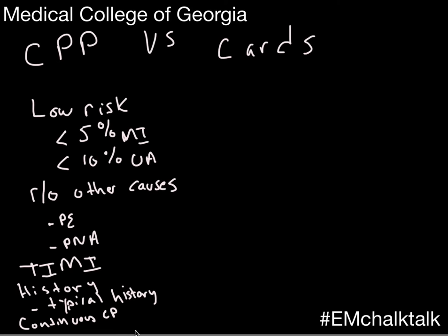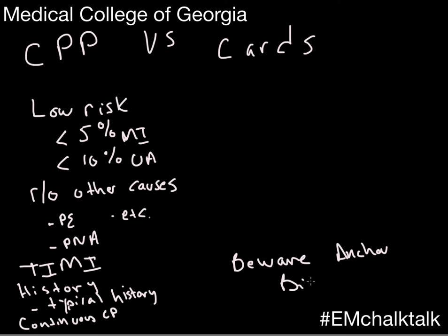A key point is that once you put someone on the chest pain pathway, you've locked them in — their care is on rails. They're not going to easily deviate to evaluate for PE or asthma. There's heavy anchor bias: the first thing you attach to doesn't go away. This is also true for inpatients admitted to cardiology. If there's a question of PE versus heart attack, you need to clearly communicate that to whoever you're admitting to, otherwise they'll just check troponins and discharge the patient, potentially missing things like PE.